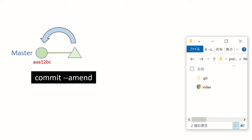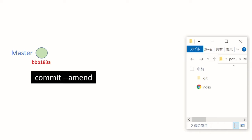After amend, it will move this change back into the previous commit. But the problem is our initial commit was aaa12bc, and after we amend, Git will assign a new ID to this initial commit. This means we are changing the history. The problem is when this project is working in a group, other members might have this history ID, so if you change the history ID it might be a problem for other members.